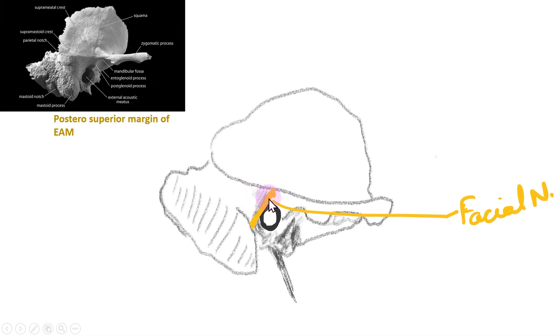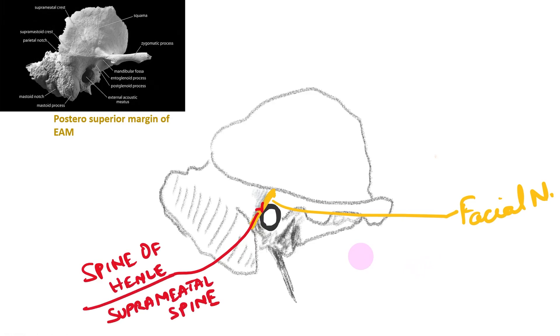There is also one more important landmark known as the spine of Henle, also known as the suprameatal spine. Both of these are indicators of the facial nerve. The third border is the tangent to the posterior border of the external auditory meatus.